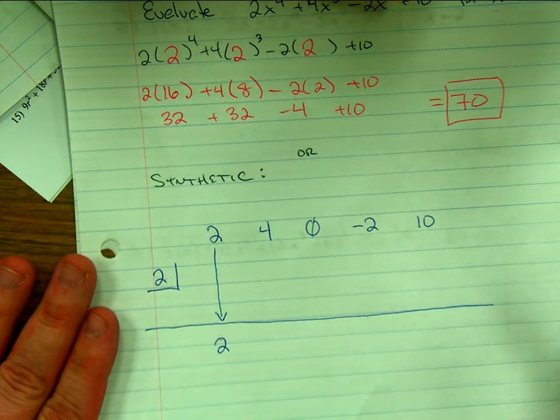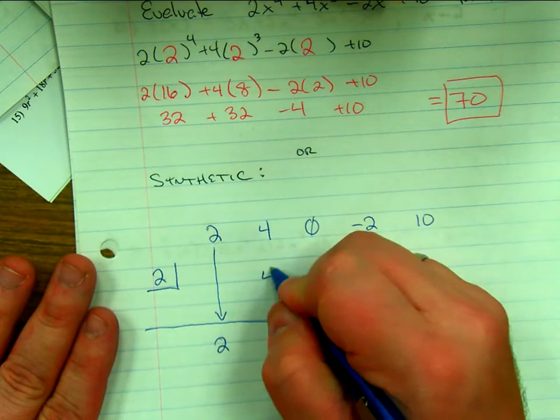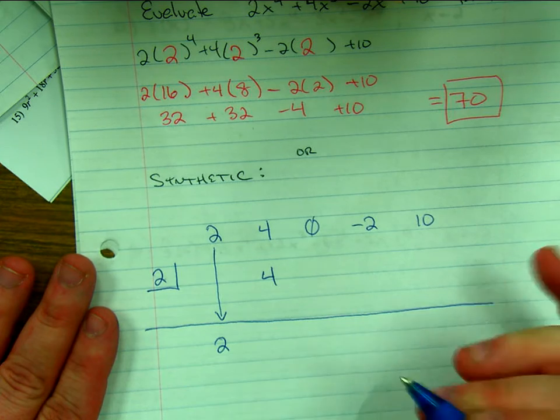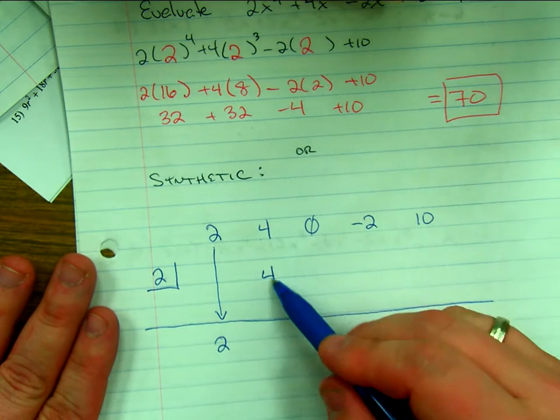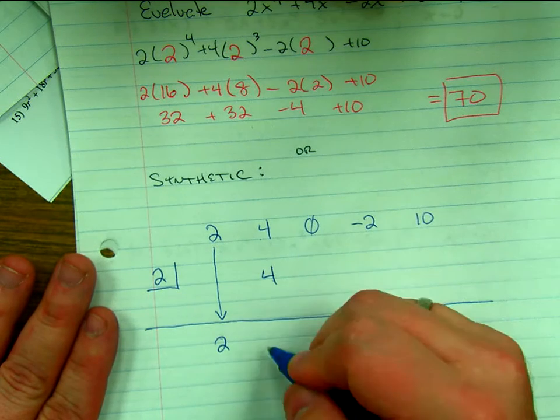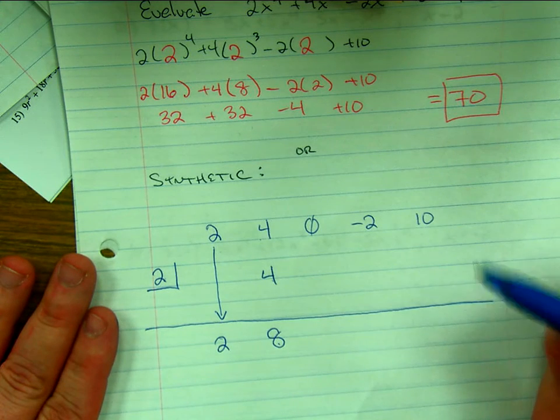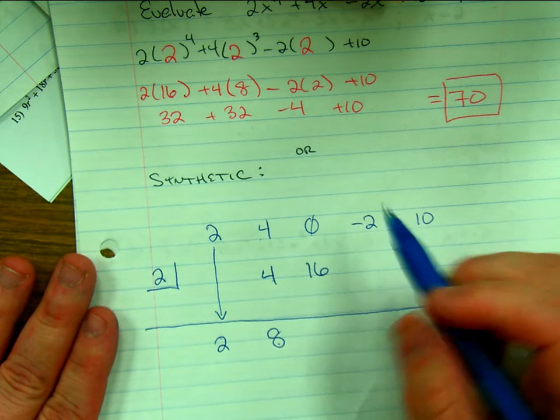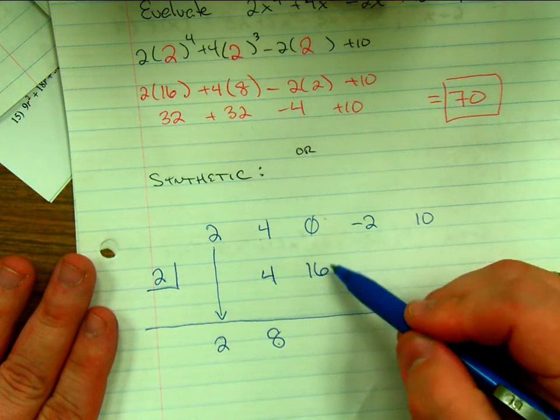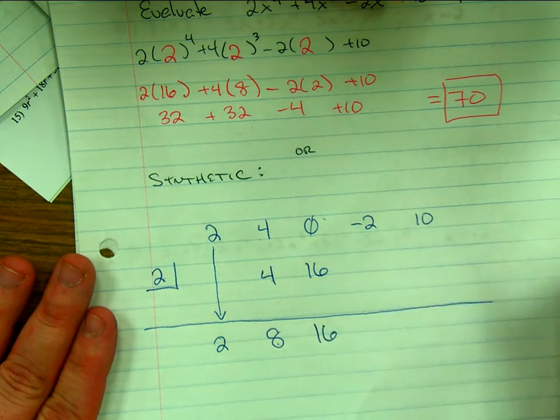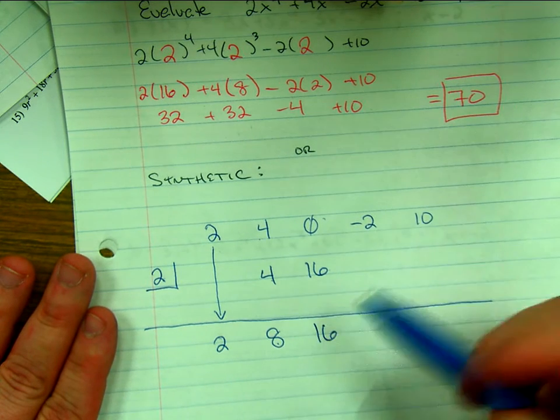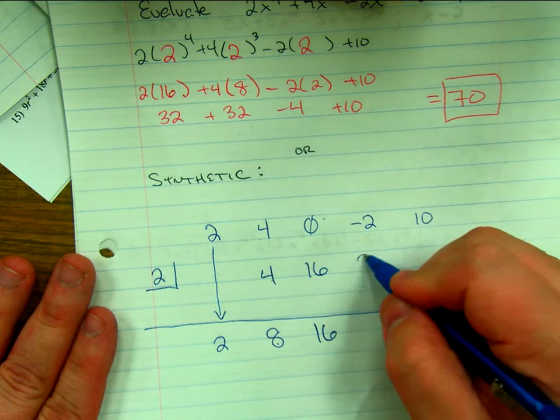Now I'm gonna add, what's 4 plus 4? 8. Now I'm gonna multiply 2 times 8, 16. Now I'm gonna add 0 plus 16, 16.